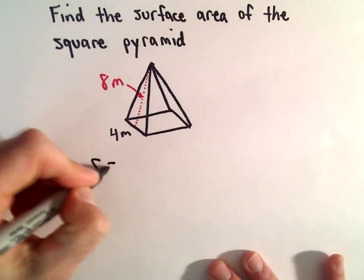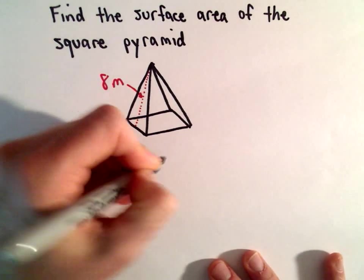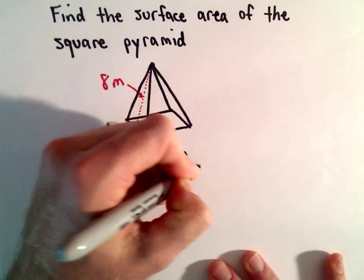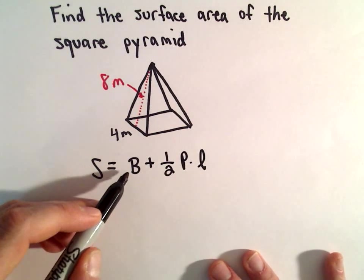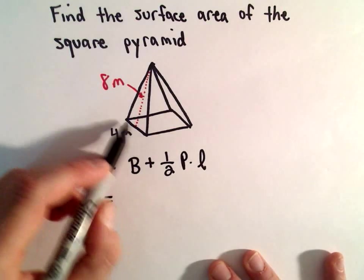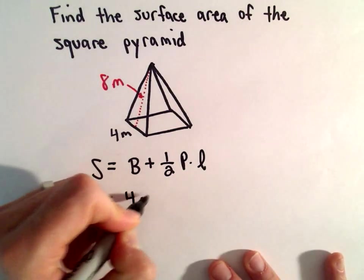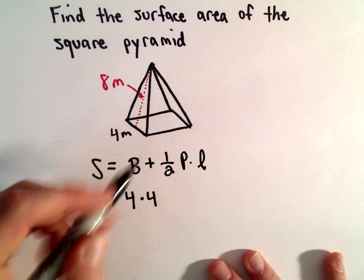Our formula is S equals B plus one-half P times L. To get the area of the base, since it's a square, we take length times width, which is 4 times 4.